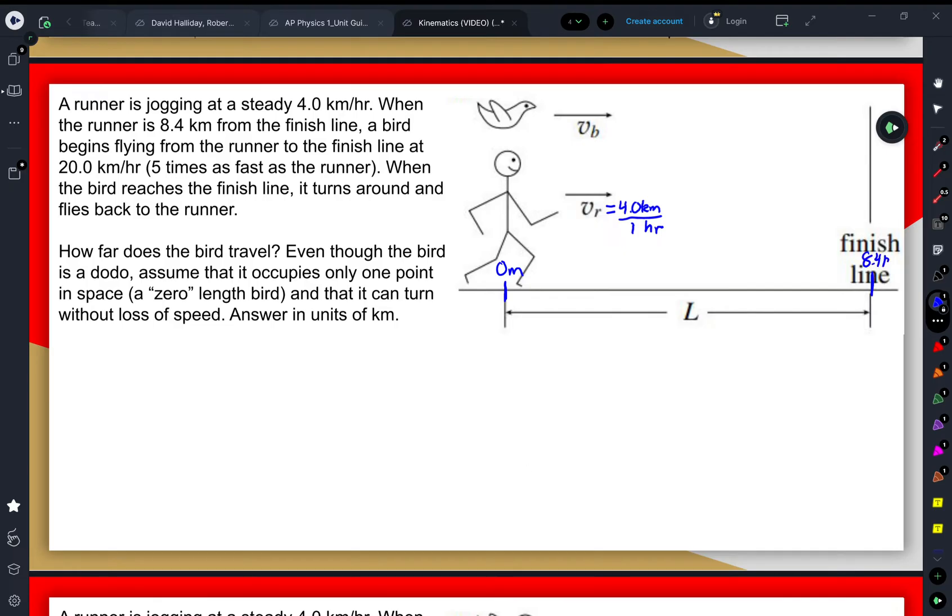So when they're that far away, a bird begins flying from the runner to the finish line at a rate of 20 kilometers every one hour—five times as fast as the runner.